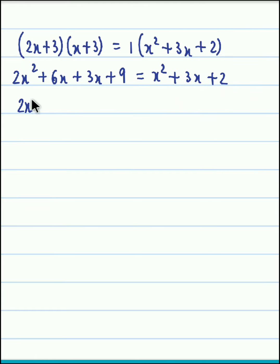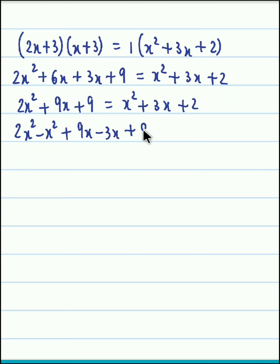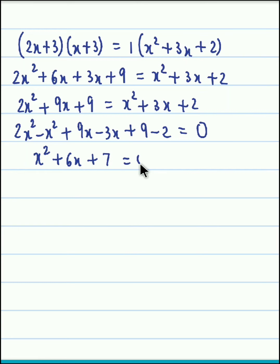So the next step gives us 2x squared, and 6x plus 3x gives 9x, plus 9, equal to x squared plus 3x plus 2. Now we transfer all terms onto the left hand side and get 2x squared minus x squared plus 9x minus 3x plus 9 minus 2 equal to 0. So finally we get the quadratic equation x squared plus 6x plus 7 equals 0.